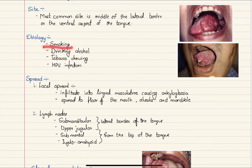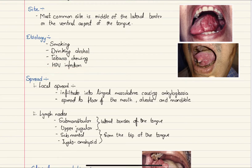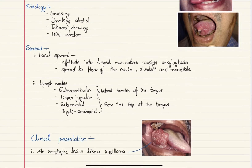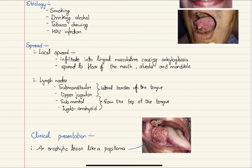The etiologies include smoking, where the incidence of cancer is higher in smokers than non-smokers, drinking alcohol, tobacco chewing, or infection with human papilloma virus, which is also associated with carcinoma of the tongue.